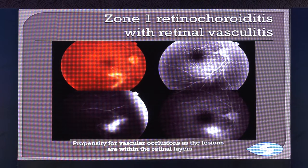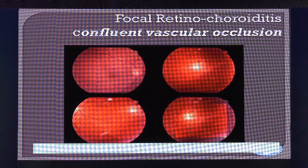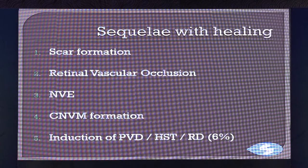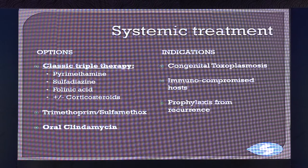Various things that can happen include scar formation, vascular occlusion, NVE, CNVM, and PVD. An important point is that a positive IgG is helpful — a negative IgG excludes toxoplasmosis, while a positive IgG does not help you make a definitive diagnosis.